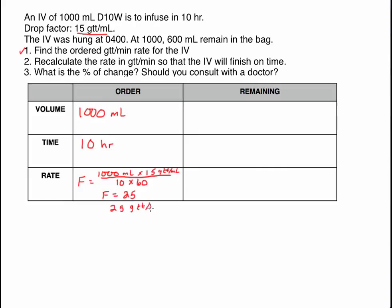What is ordered for the patient is 25 drops per minute. Keep in mind this is an extra step compared to the last problem, where the ordered rate was given. Now we think about what remains. The bag was hung at 0400 and we come back at 1100 — we're told that 600 milliliters remains. In the last problem we had to subtract; in this one, we don't, because 600 milliliters remains directly stated.